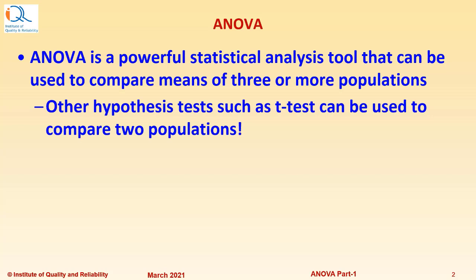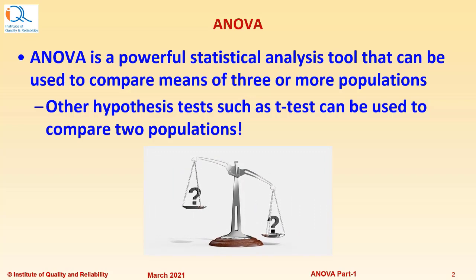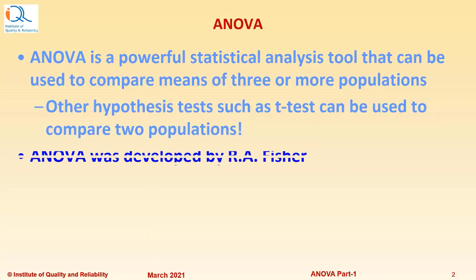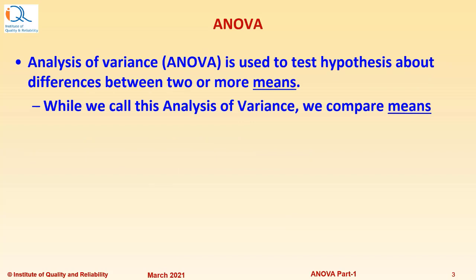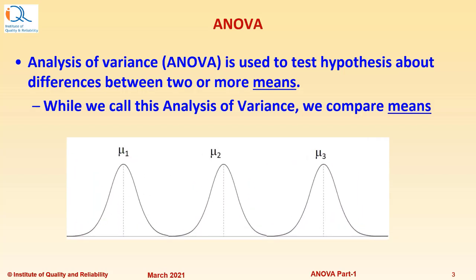ANOVA is a powerful statistical analysis tool that can be used to compare means of three or more populations. Other hypothesis tests such as the T-test can be used to compare only two populations. ANOVA was developed by R.A. Fisher. An analysis of variance or ANOVA is used to test hypotheses about differences between two or more means.